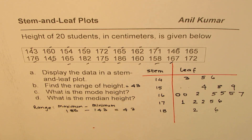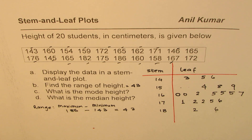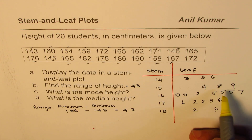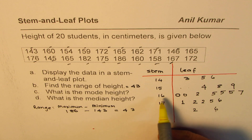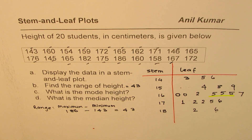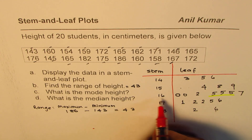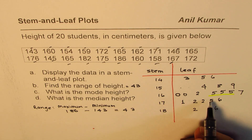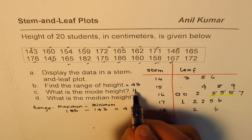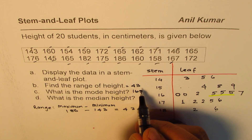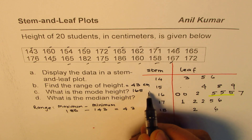What is the mode height? Mode means the most frequent value. We look at the leaf part and see which number repeats most in any particular row. Here, 5 appears three times for stem 16, meaning 165 is the most frequent height. So the mode is 165 centimeters.